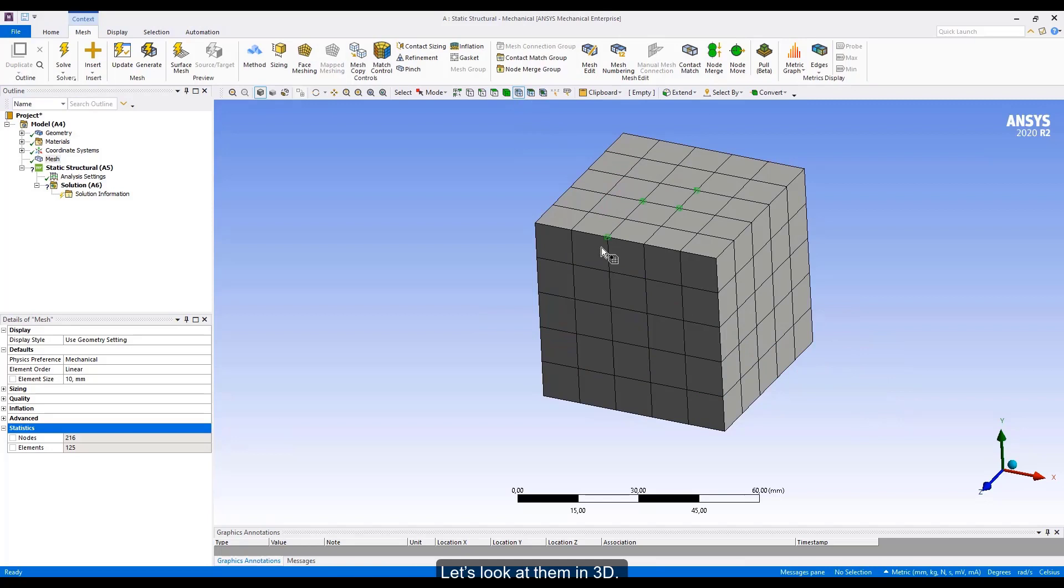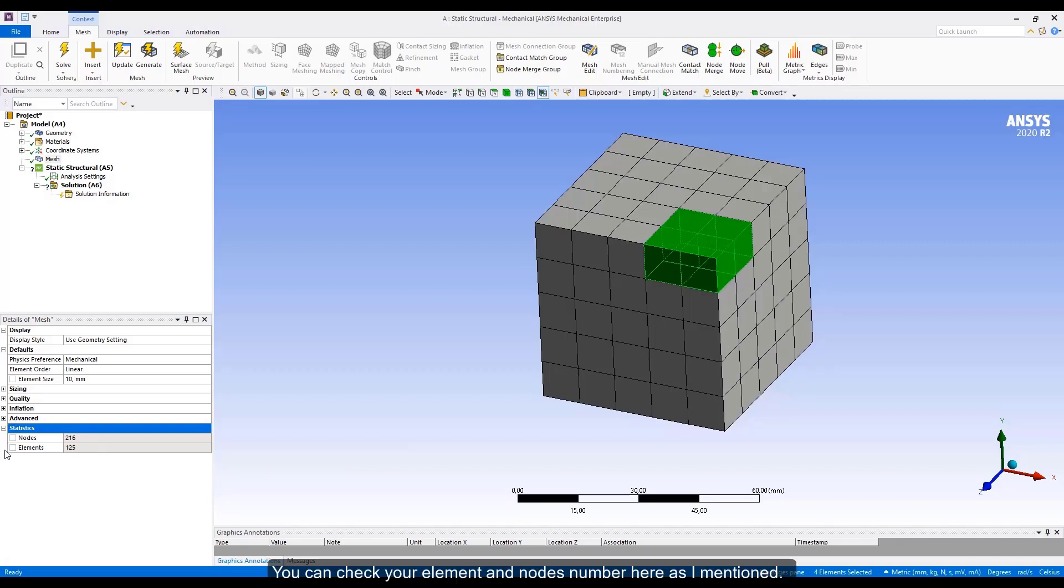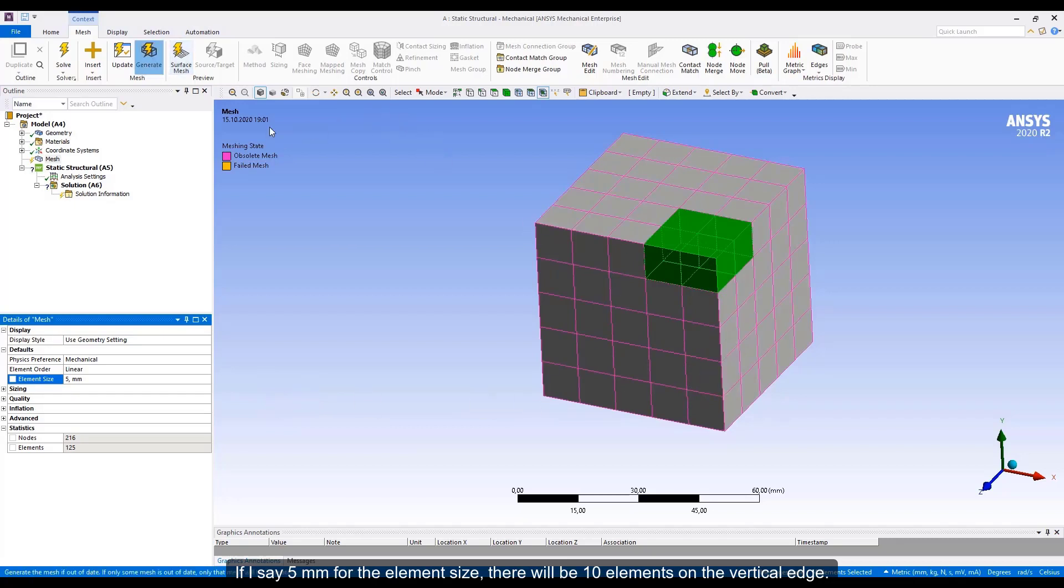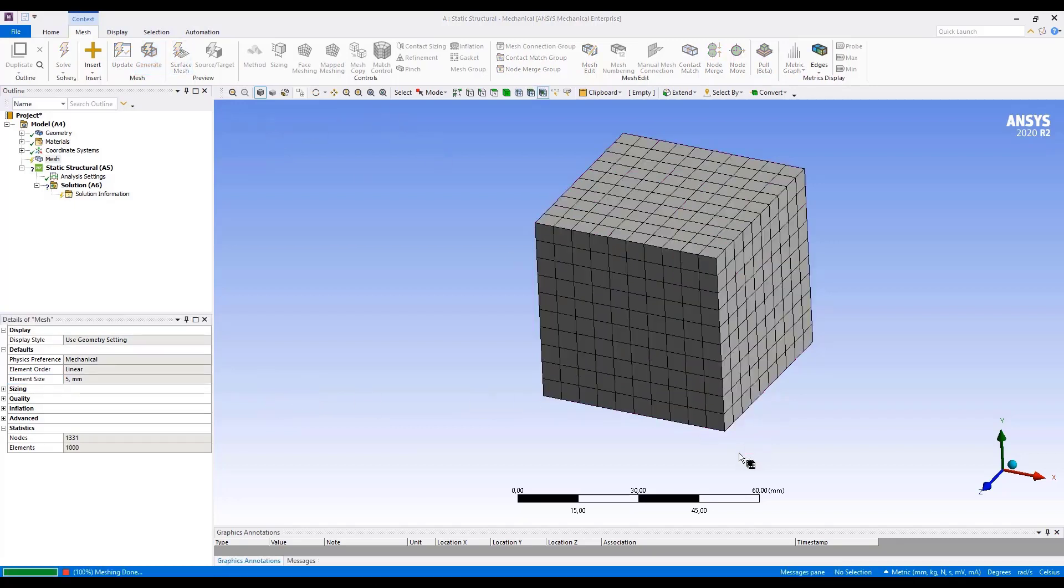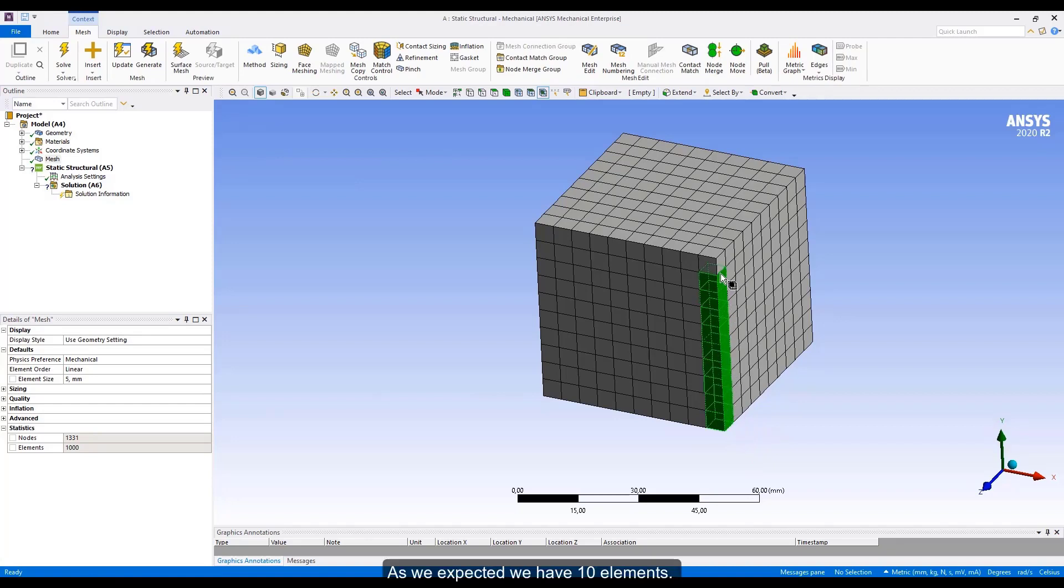Let's look at them in 3D. Nodes are the same and elements are 3D anymore. I think you got what the nodes and elements are. You can check your element and nodes number here as I mentioned. For example, let me increase them. The element size is 10 millimeter now. The length was 50 millimeters. So, we have 5 elements here. If I save 5 millimeter for the element size, there will be 10 elements on the vertical edge. As we expected, we have 10 elements.